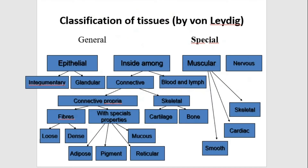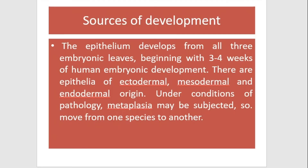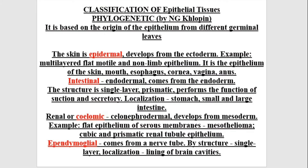Epithelium can be classified by function into covering and glandular epithelium. Histogenetic classification is based on embryonic origin — epithelium develops from all three embryonic layers. Epidermal type originates from ectoderm and includes the epidermis of skin, epithelium of the nasal cavity, mouth cavity, anal canal, and cornea. Endodermal type originates from endoderm and includes epithelium of the digestive tube and respiratory system.